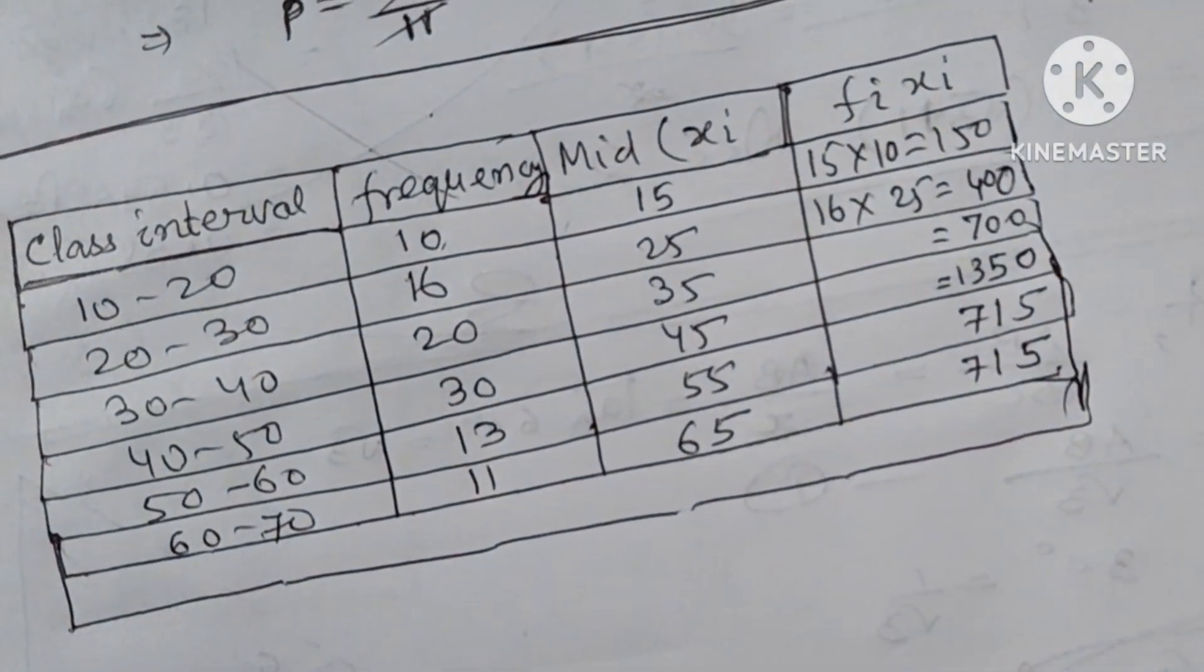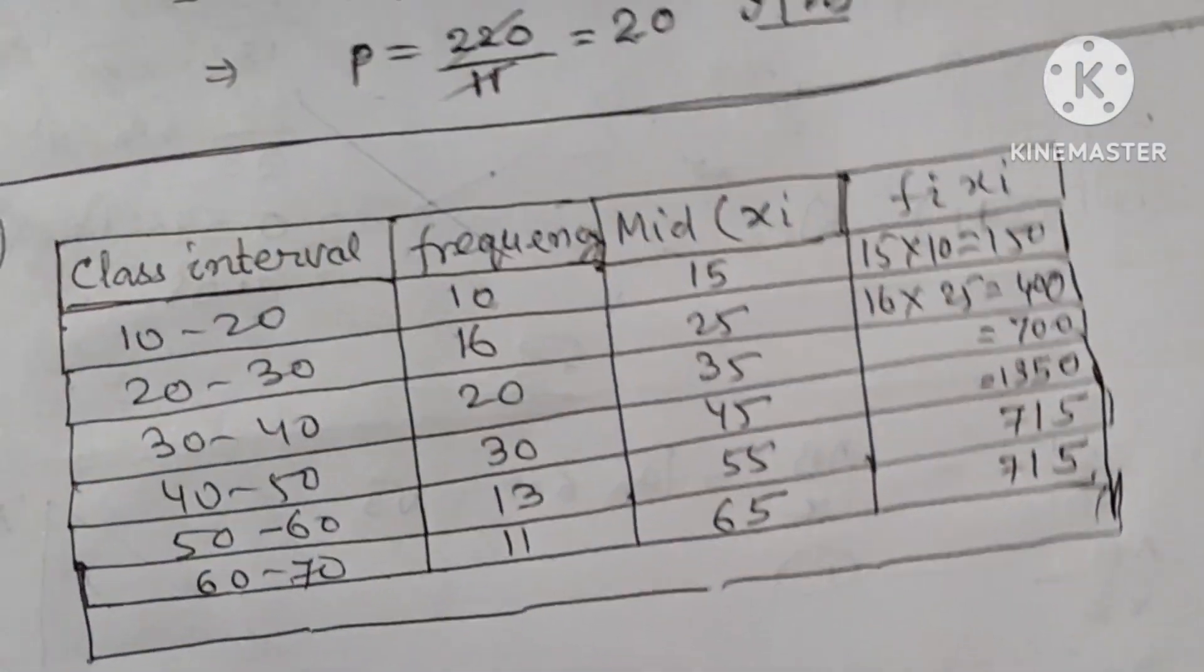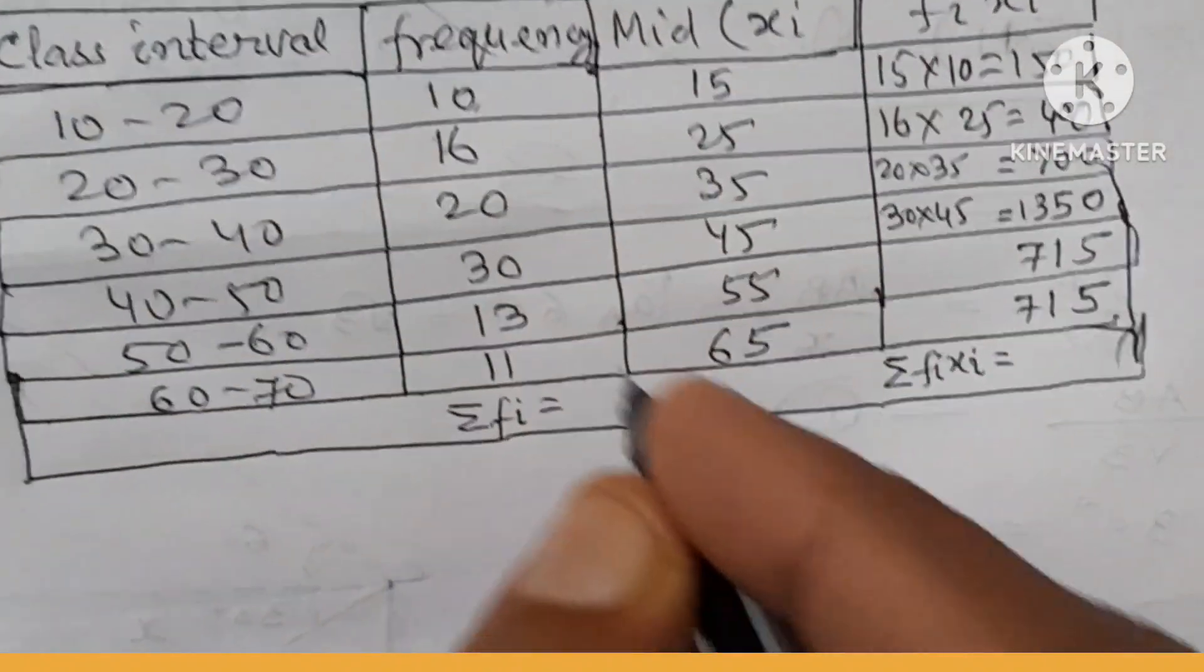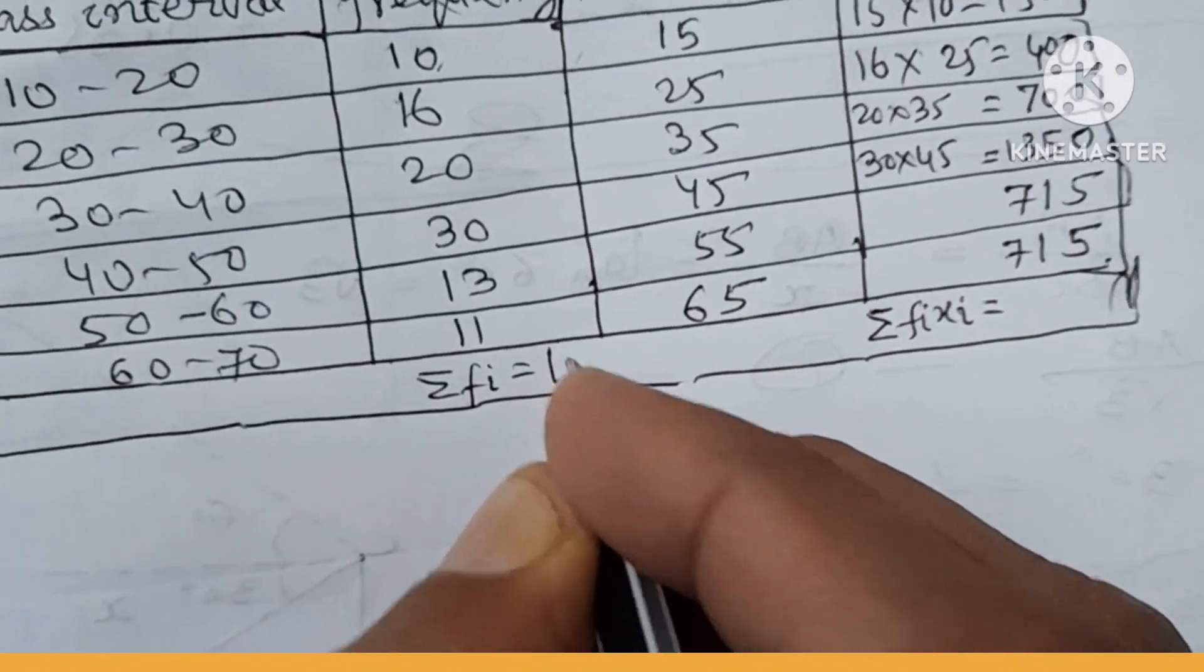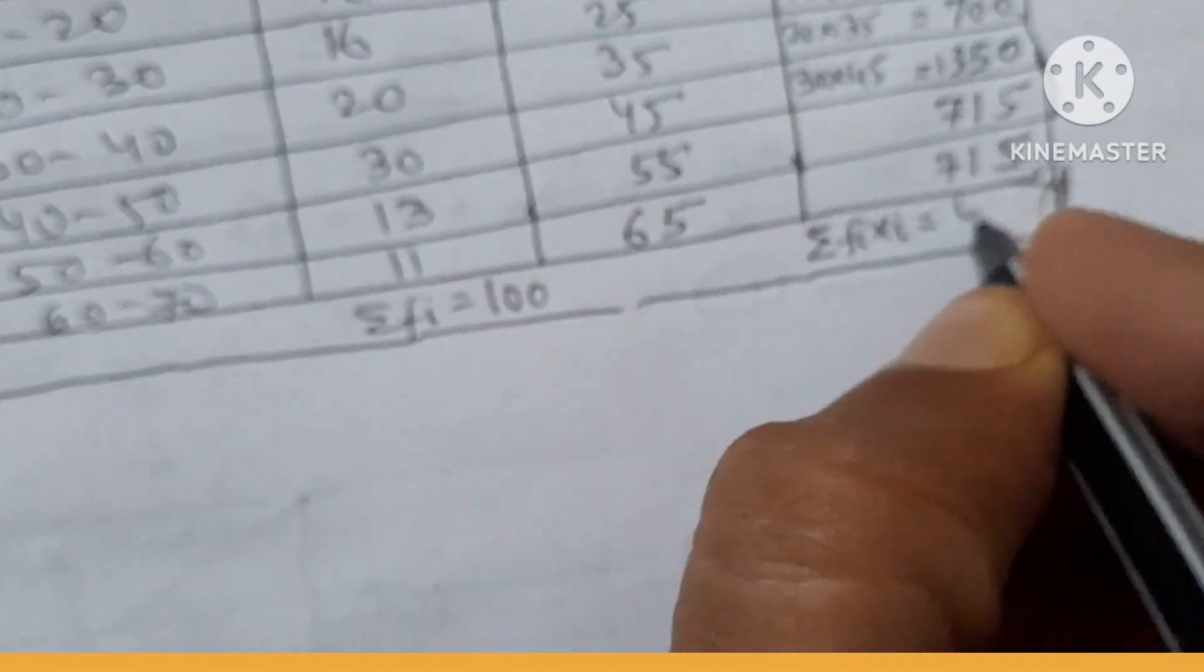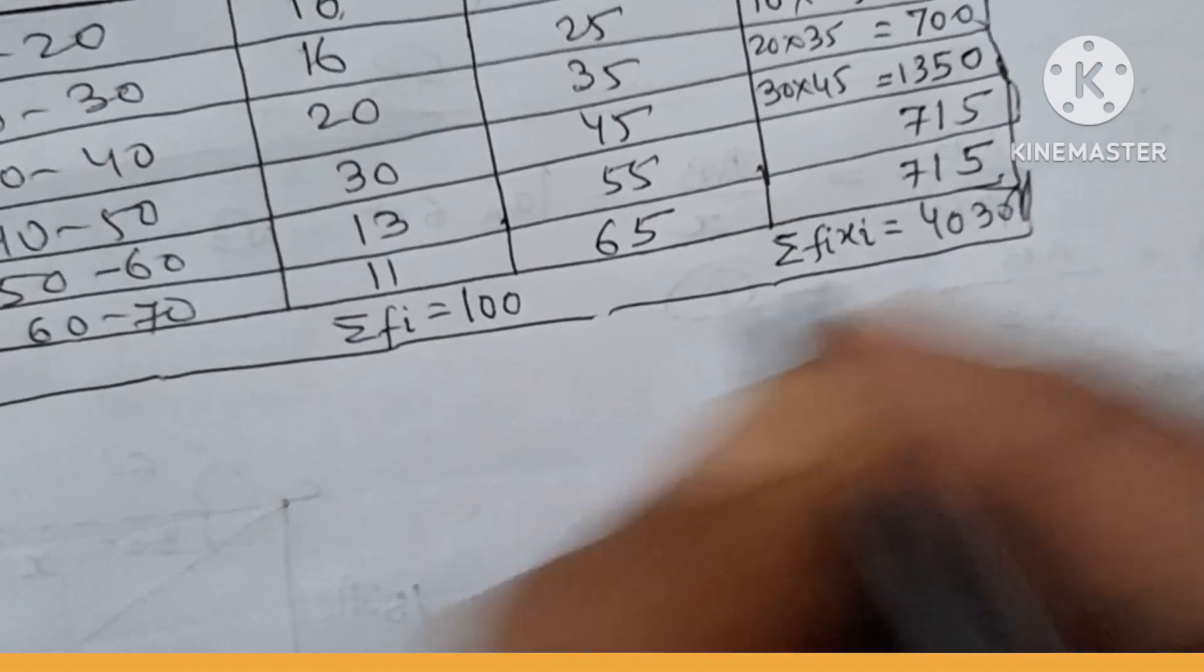After that we calculate the total of the frequency, that is summation of fi and summation of fi into XI. So summation of fi is 100, you can add. Summation of fi XI is 4030, you can also add it.